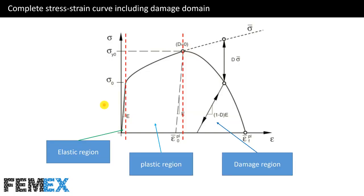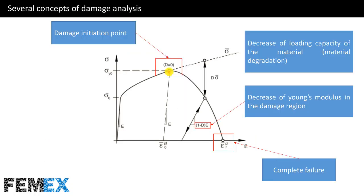This is a typical complete stress-strain curve of a ductile metal. This is the elastic region, this is the plastic region, and this is the damage region. This is the ultimate point. As the material reaches this point, if we increase the loading, the material goes to the damage region. This is the damage initiation point, and after the damage initiation point, the material goes to the damage region and finally it is completely failed.